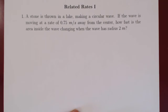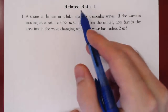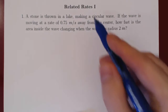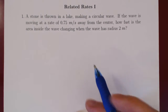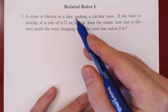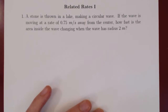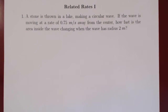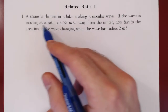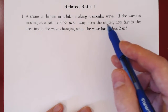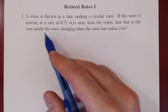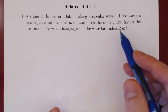We'll first try to visualize the situation, then label the variables, write down what we know and what we want, then find a relation between the variables — that's why it's called related — and then differentiate, because the rate of change is just the derivative. Here's the situation: a stone is thrown in a lake making a circular wave, moving at a rate of 0.75 meters per second away from the center. We're asking how fast is the area inside the wave changing when the wave has a radius of 2 meters.